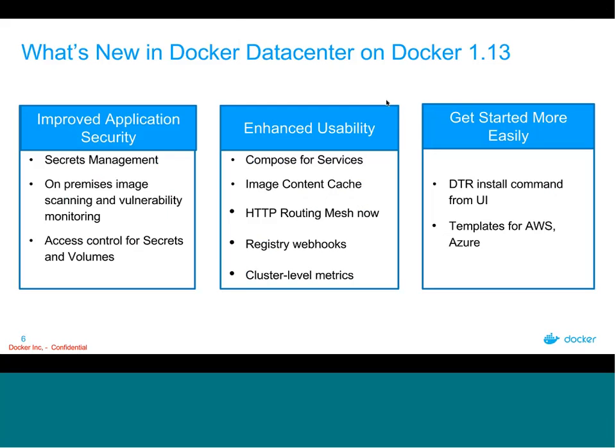In this release we really focused on three major areas. First is improved end-to-end application security, with the key feature of secrets management on the UCP side — the ability to inject confidential data like passwords or certificates directly into a running container, store them securely on the cluster, and provide access control around which users can access those secrets.